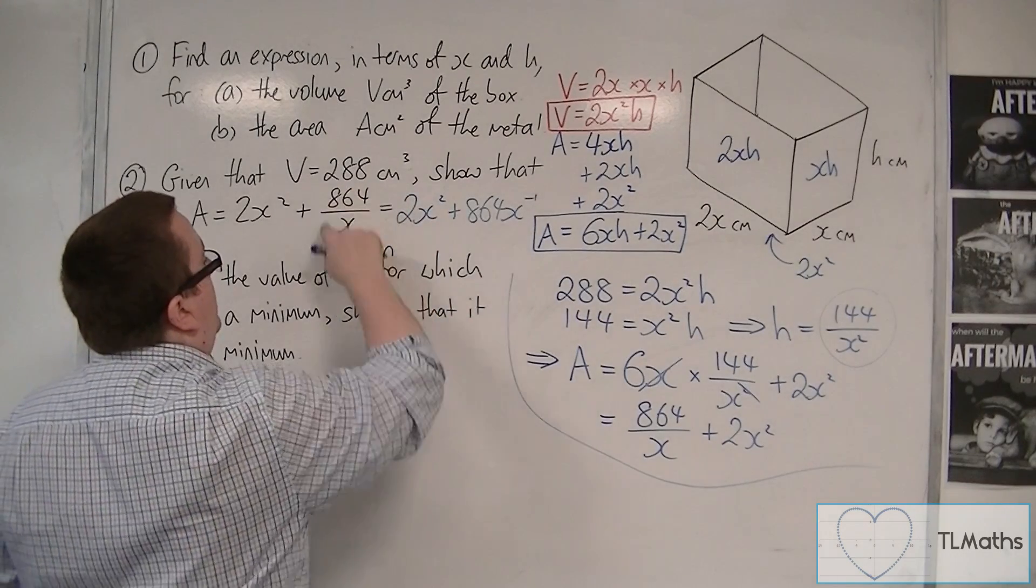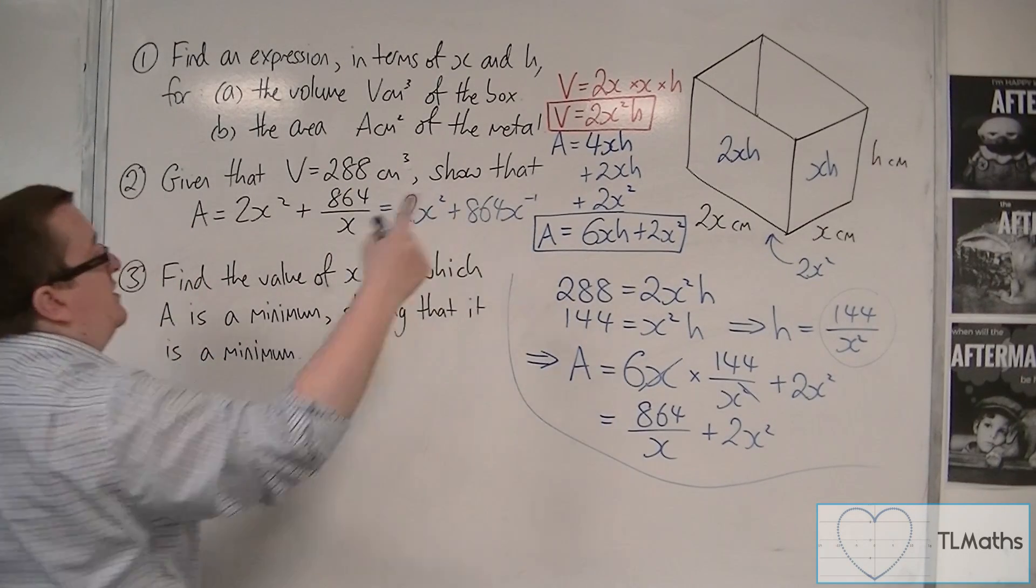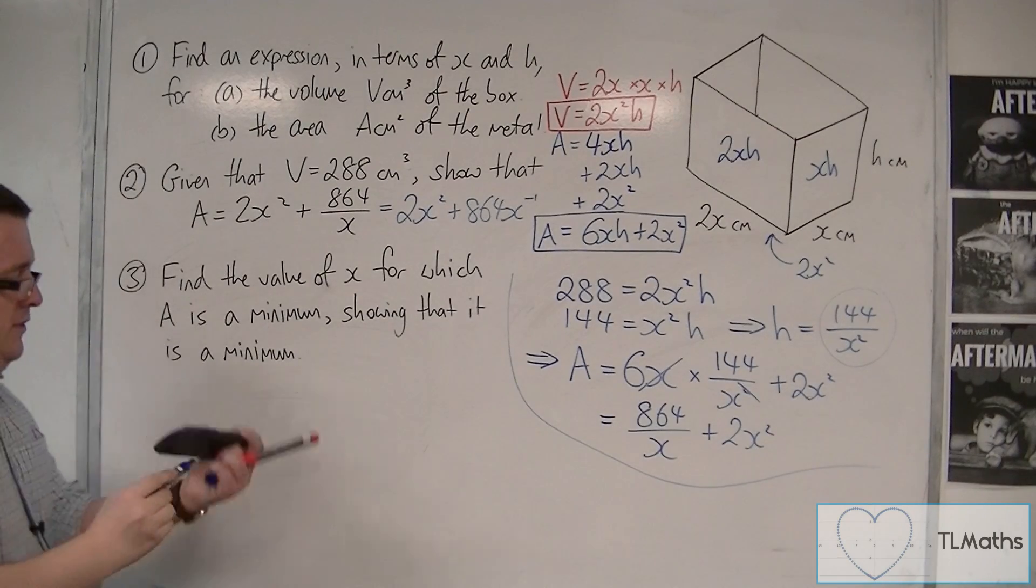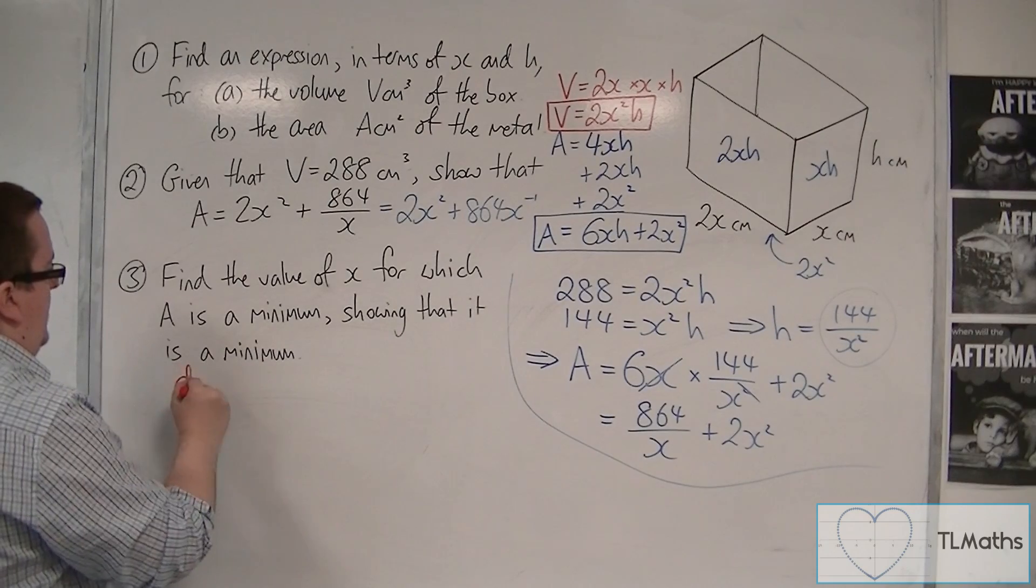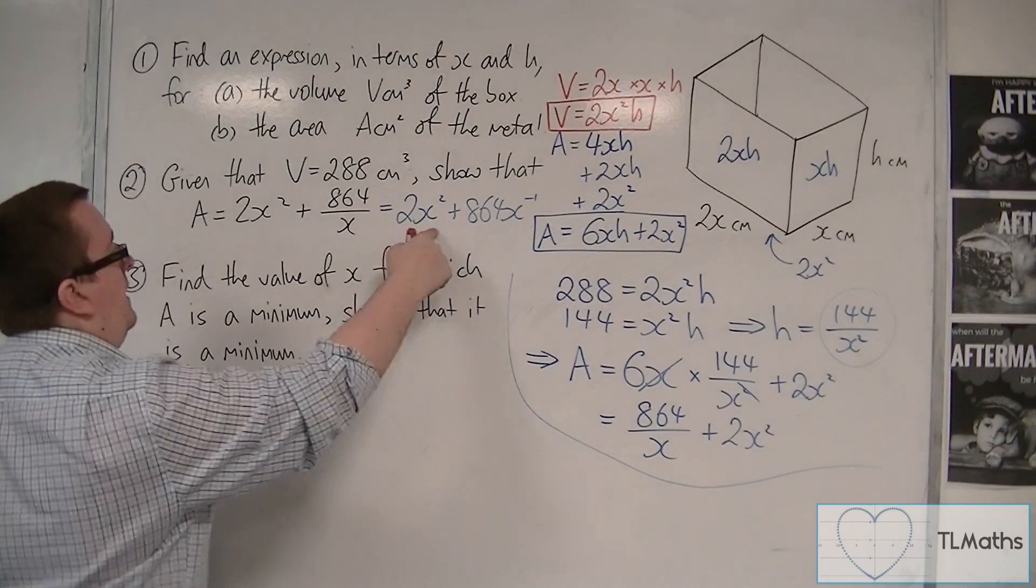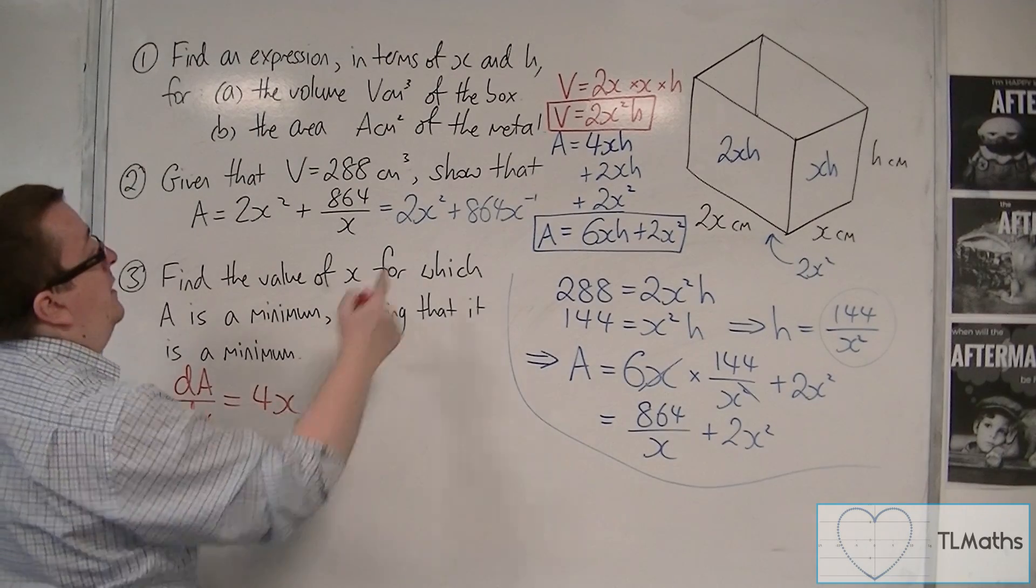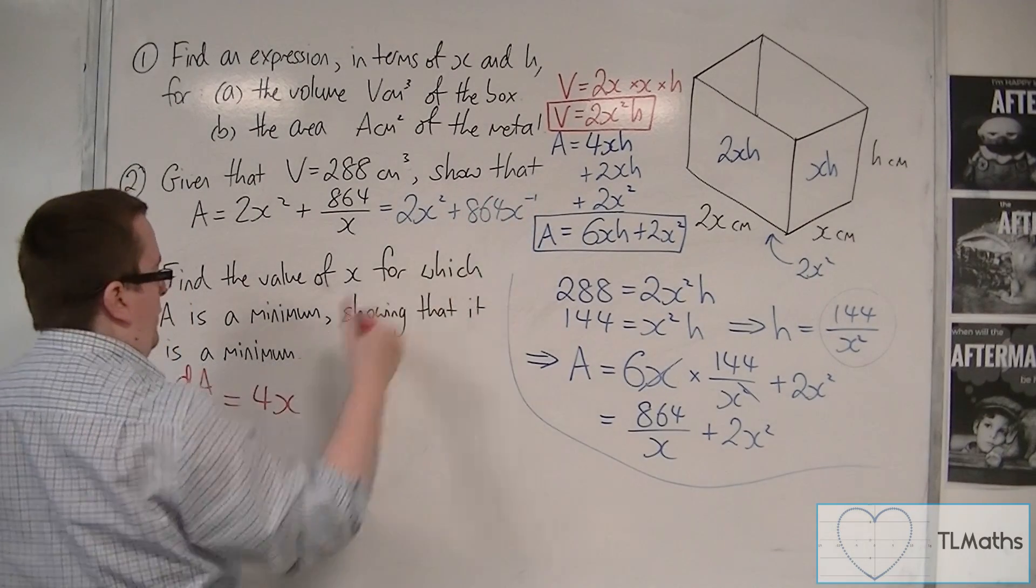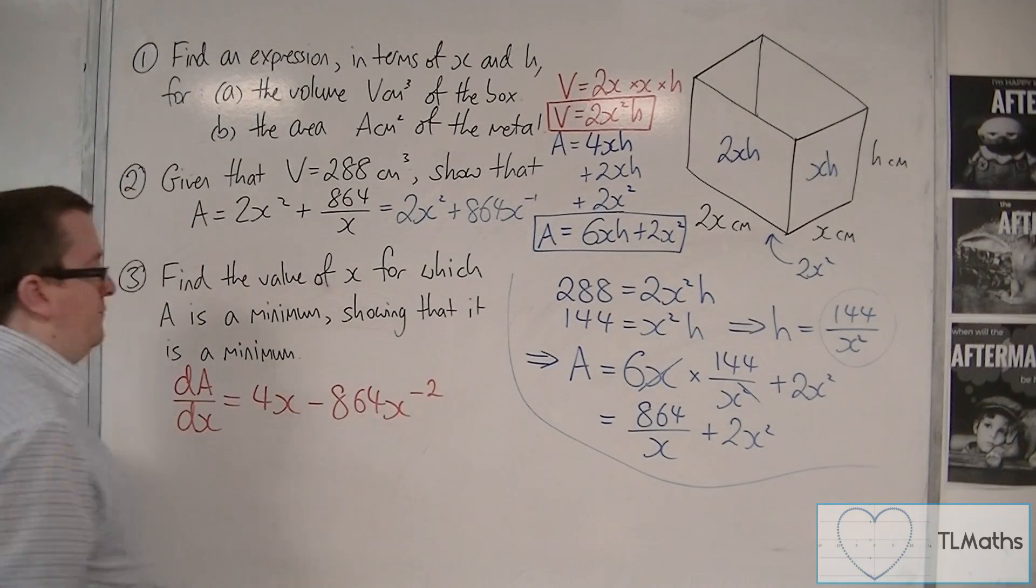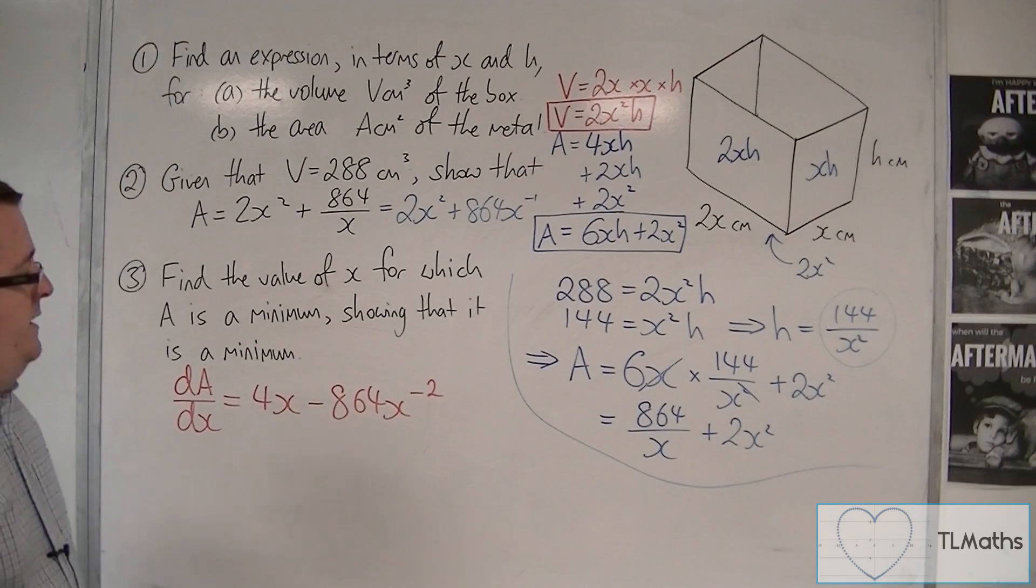And so I must use calculus. And in order to differentiate this, I must write it as x to the minus 1. So now, let's write this in red. dA by dx, the first derivative, is 4x. Then we've got the minus 1 coming down to the front. And then take 1 off the power.